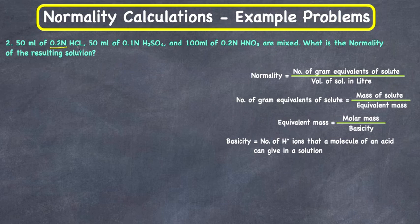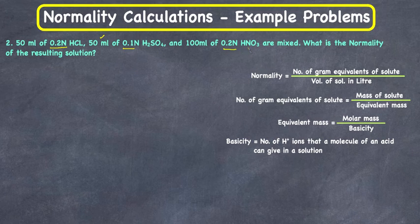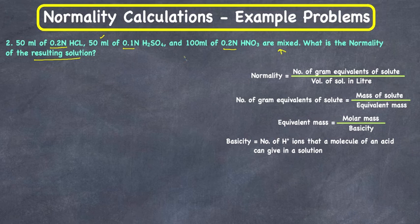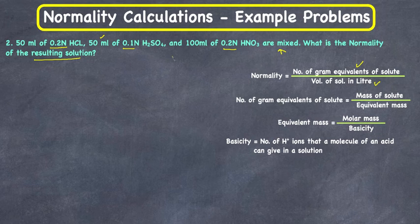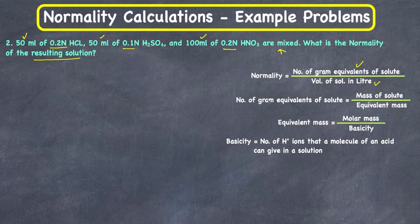Let's go to the second example. We have 50 ml of 0.2 N HCl, 50 ml of 0.1 N H₂SO₄, and 100 ml of 0.2 N HNO₃ — all mixed together. They are asking: what is the normality of the resulting solution? We need to calculate gram equivalents for each acid, add them together, and divide by the total volume: 50 + 50 + 100 ml.